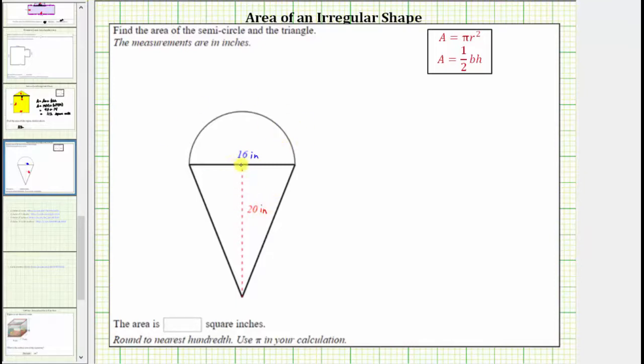Now if we focus on the semicircle, notice how this is half of a circle and because the area of a circle is equal to pi r squared, the area of the semicircle is equal to one-half pi r squared or pi r squared divided by two.